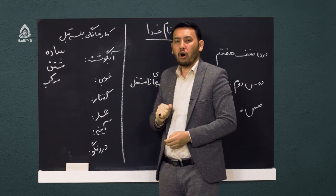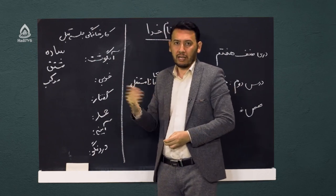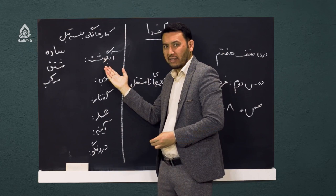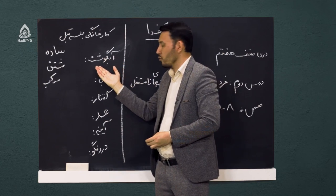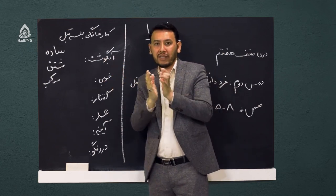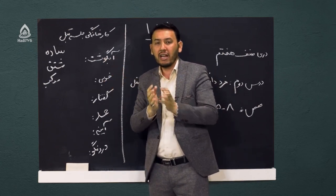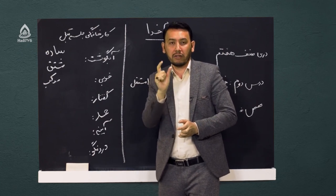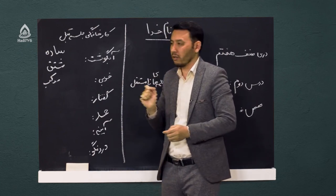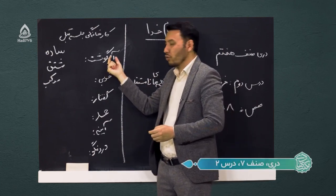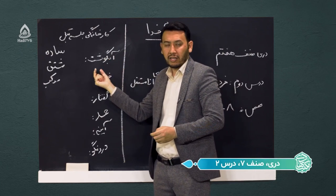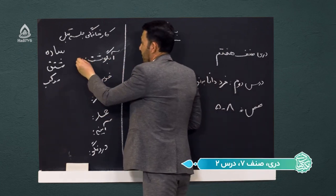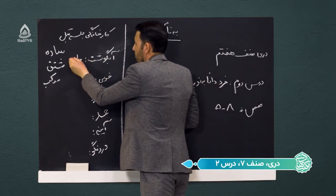کلمه اول: آبگوشت. آبگوشت یک کلمه‌ای است که مشخص است؛ آب یک جزء معنادار است، گوشت یک جزء معنادار دیگر است. در کنار هم ترکیب شده و یک کلمه با یک معنی نو و تازه را شکل داده. پس چون دو جزء معنادار در کنار هم قرار گرفته، مرکب است.